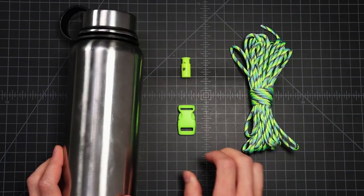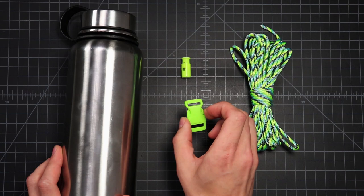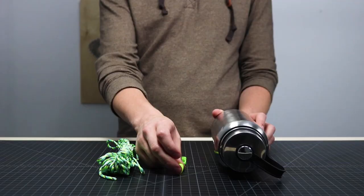I've got 25 feet of paracord, we'll only need about 15 of that. You'll need a half inch buckle and also a cord lock.